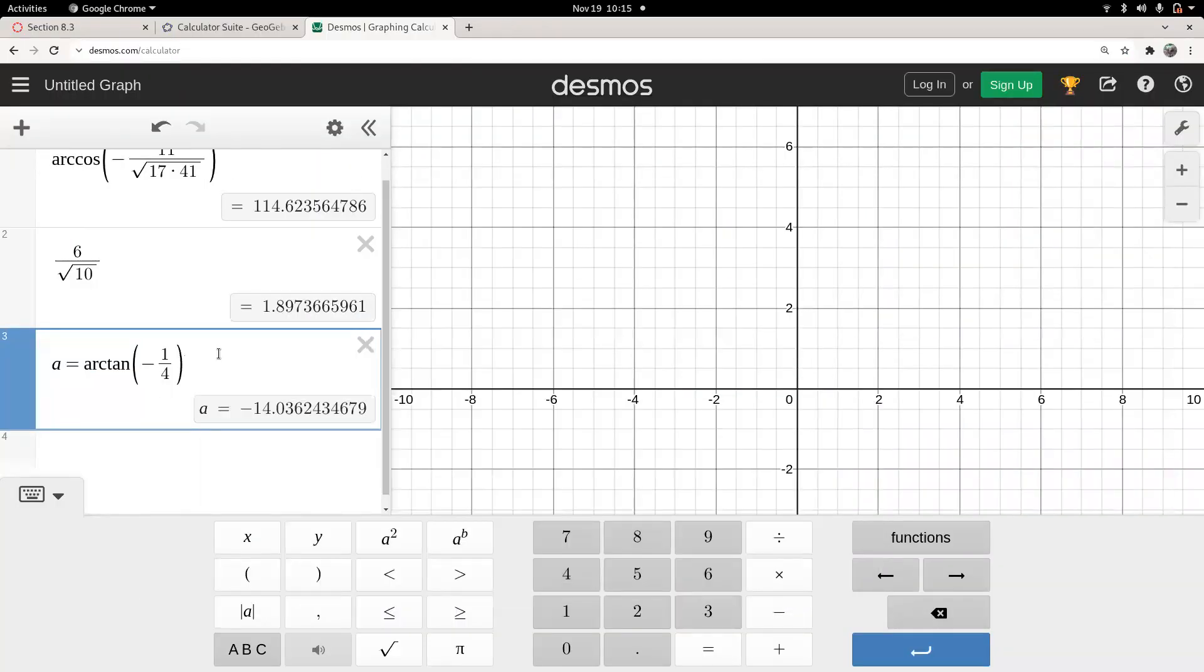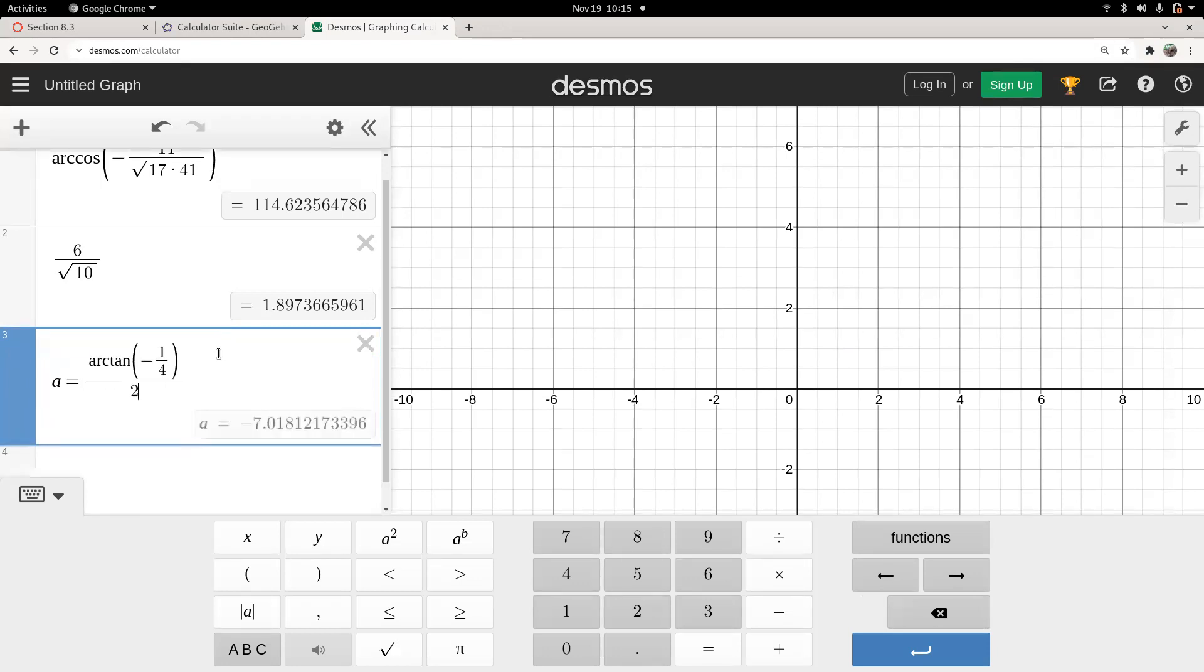And back here, our new angle for the square root is going to be half of that. So just cut that in half, that gives me an angle of about negative seven.